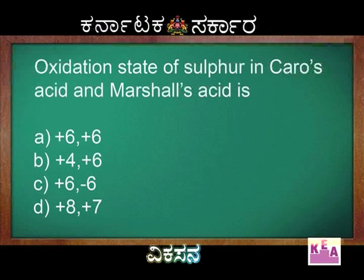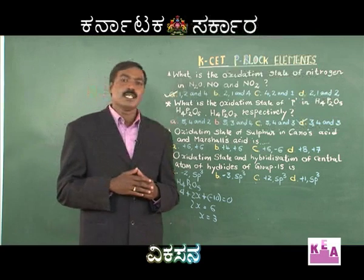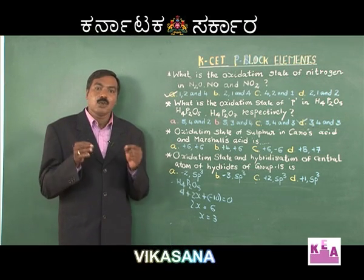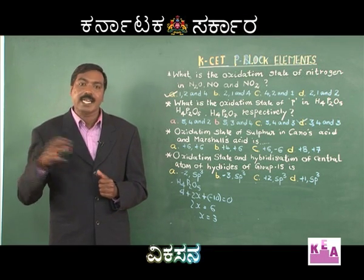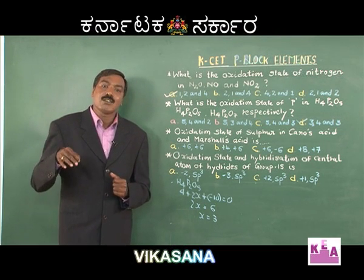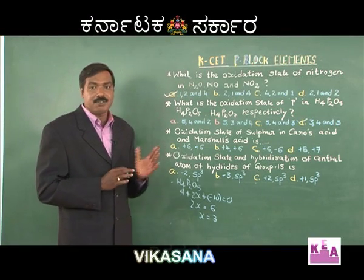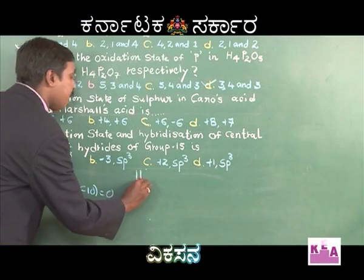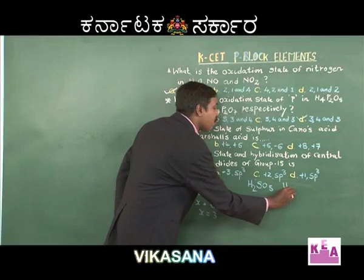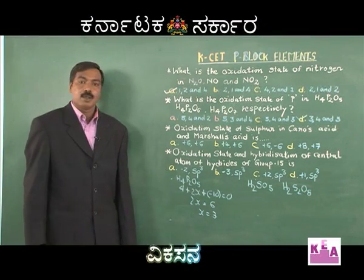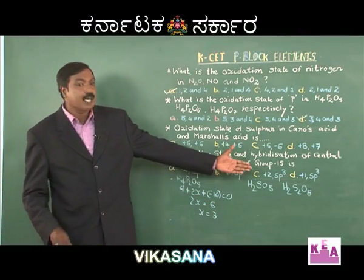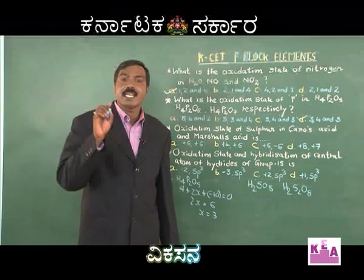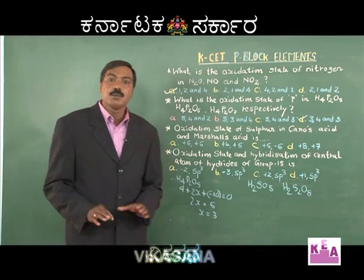The third question: what is the oxidation state of sulfur in Caro's acid and Marshall's acid? This comes under group 16 oxy acids of sulfur. These are the only two oxy acids with an exceptional case. Caro's acid is peroxomonosulphuric acid (H₂SO₅) and Marshall's acid is peroxodisulphuric acid (H₂S₂O₈). If you calculate by the usual oxidation state methodology, you will get +8 and +7 — but this is wrong.